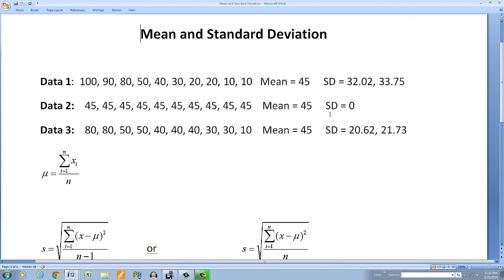Obviously for the second one, there's no deviation, so it's going to be zero. Standard deviation is zero. And for the third set of data, it's 21.73 using this formula here.